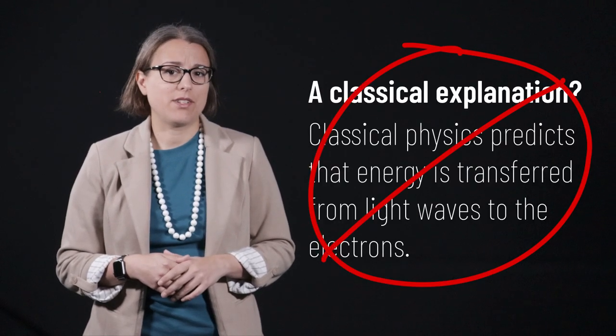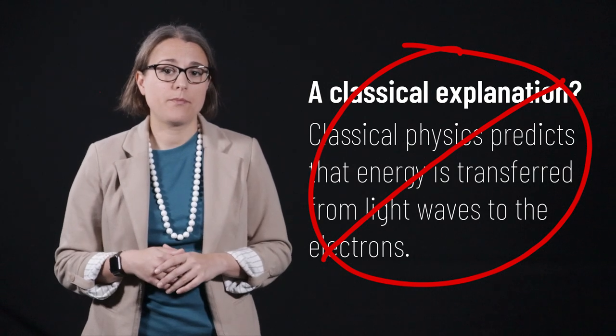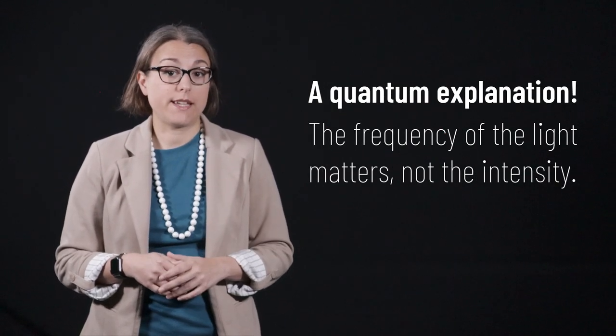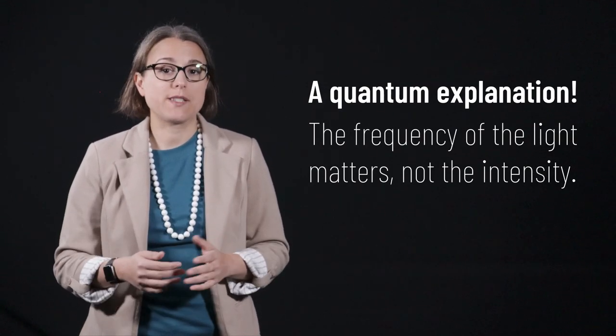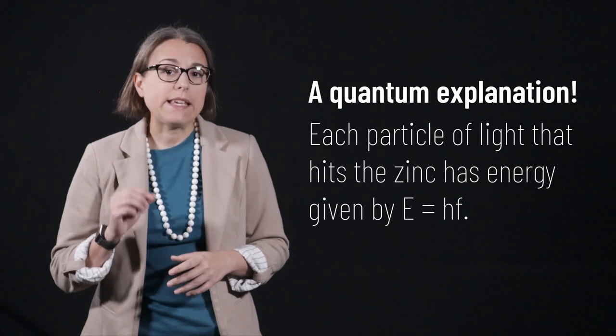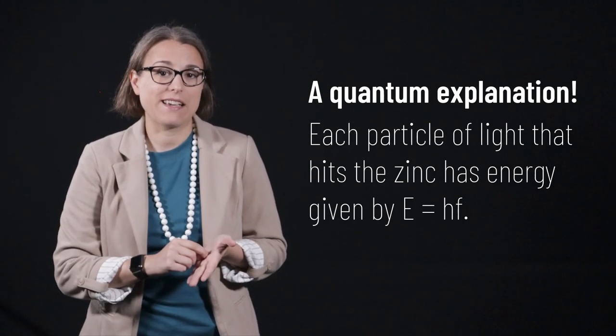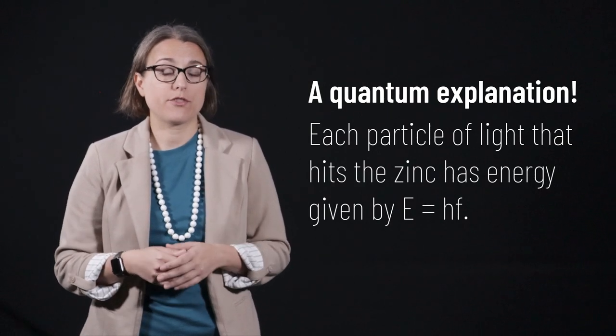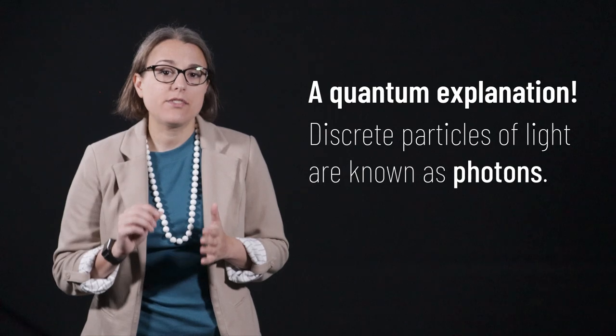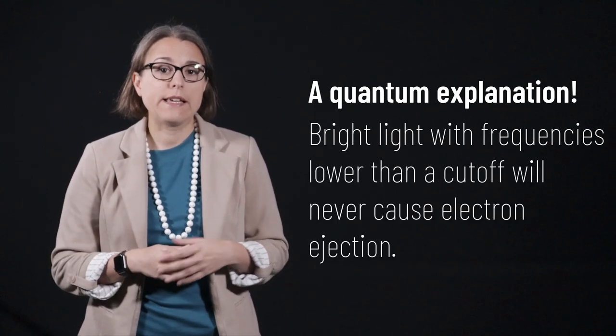Einstein's results must have another explanation. The classical model does not hold up here. The quantum model states that what happens is that the intensity of the light does not matter, the frequency of the light does. Each individual discrete particle of light that hits the zinc has energy given by Planck's constant times the frequency. These individual quantized particles of light are known as photons.